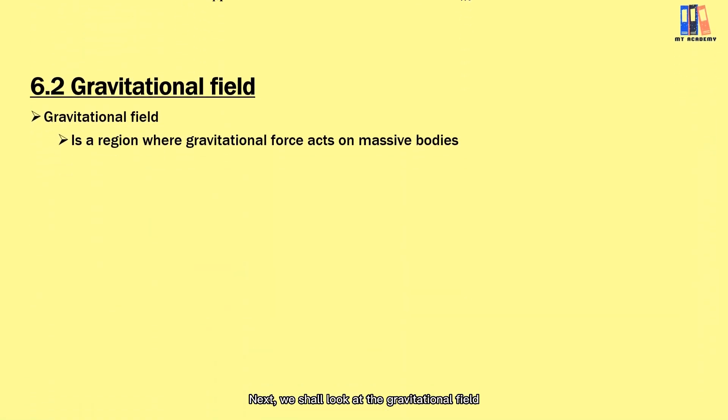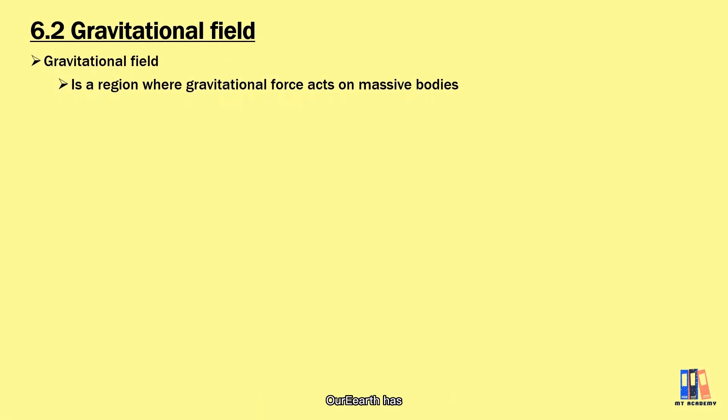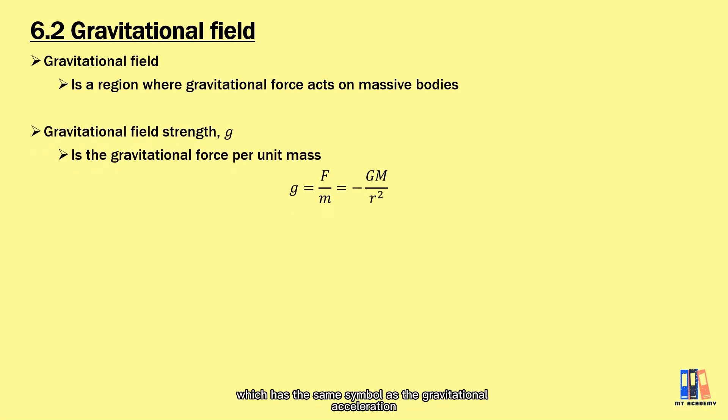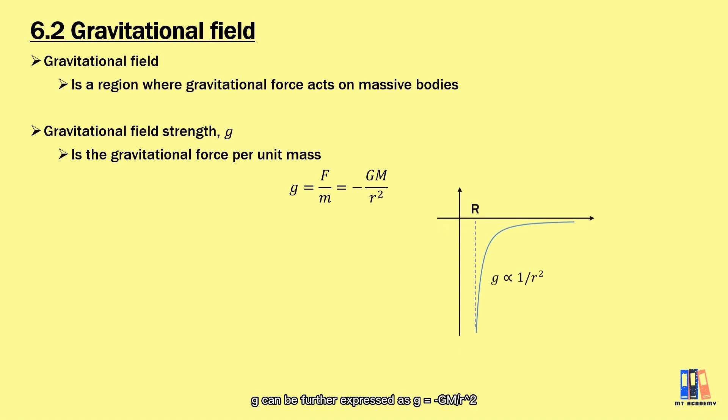Next, we shall look at the gravitational field. Our Earth has a gravitational field that applies gravitational force on objects around it, such as the Sun, the Moon, satellites, etc. It depends on the mass of the Earth itself and the distance from the Earth. The gravitational field strength is defined as the gravitational force per unit mass, that is g = F/m, which has the same symbol as gravitational acceleration learned in the earlier chapter. From the first formula, g can be further expressed as -GM/r².